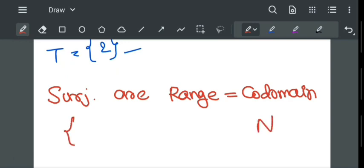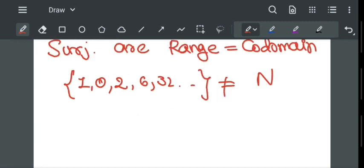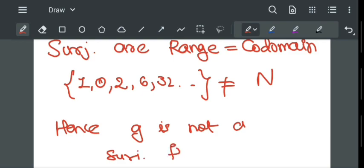We can start for 0, g value is 1, for 1 value is 0, for 2 value is 2, for 3, g of 3 is 6, g of 4 is 32. So we can see that there is break in this sequence. So here range is not equal to co-domain, hence we can say that g is not a subjective function.